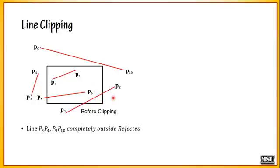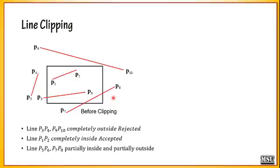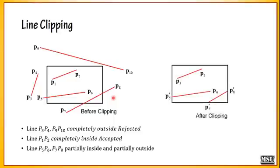Line p3-p4 and p9-p10 are completely rejected since they are completely outside the window. Line p1-p2 is inside so it is accepted. Lines p5-p6 and p7-p8 are partially inside and partially outside, so we want to identify new intersection locations. For p5-p6, since p5 is outside and p6 is inside, we keep p6 as-is and find p5 dash. For p7-p8, both p7 and p8 are outside the window, so we identify new values p7 dash and p8 dash. For that we need an algorithm.